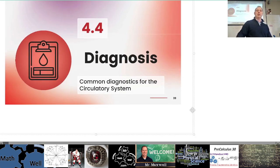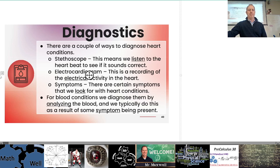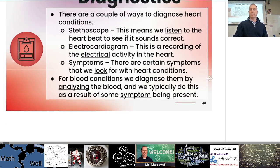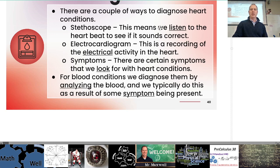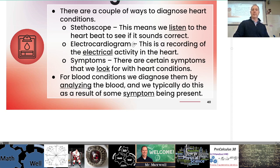Section 4.4 — diagnosis. Some common diagnostics for the circulatory system: a stethoscope — we learned about this in the history of health care — is used to listen to the heartbeat to see if it sounds correct. There's more to it than just the basic sound, but doctors know what they're listening for. An electrocardiogram is a recording of the electrical activity of the heart — I believe that's the ECG or EKG.